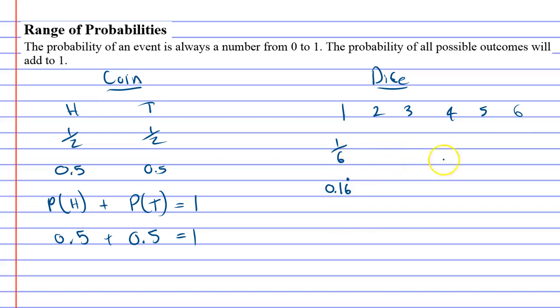Now, if you add up all the probabilities, it should equal 1. So if I went 1 over 6 plus 1 over 6, there's 6 numbers above. So if I added up 6 times, it should equal 1, which it does.